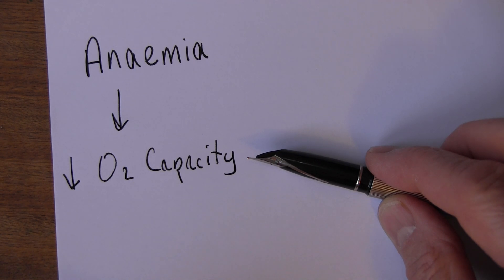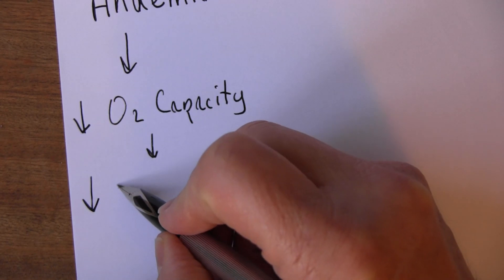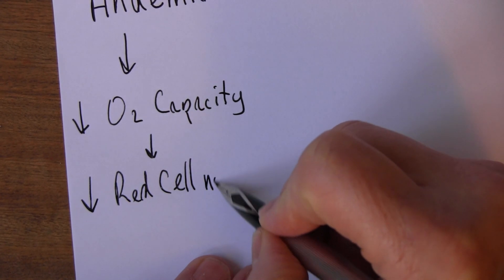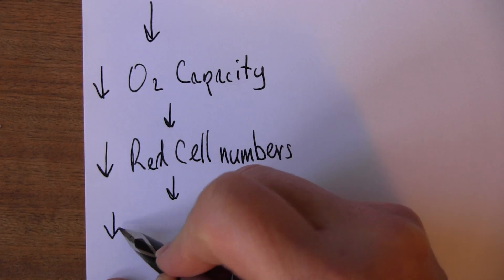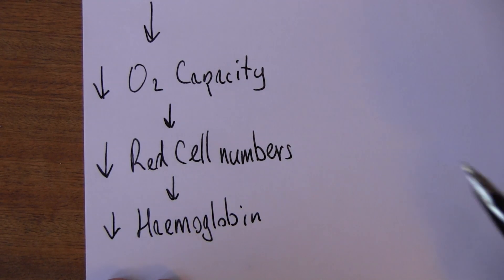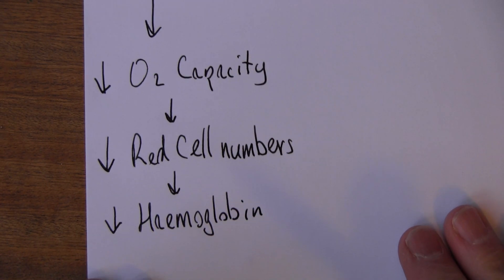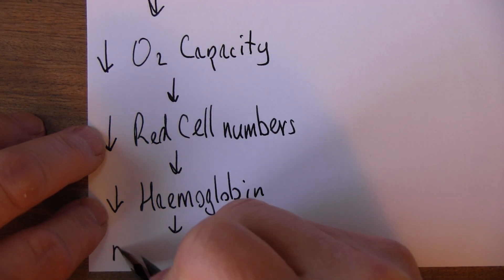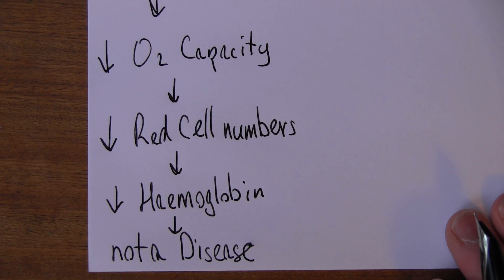As you probably know, the oxygen in the blood is carried by the red cells. So this is often associated with reduced red cell numbers and also a reduction in the amount of hemoglobin. The hemoglobin being the red pigment in the red cells that transports the oxygen. It's important to notice that anemia is not a disease in its own right, rather it is a symptom of many possible diseases.